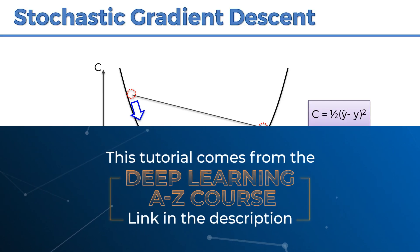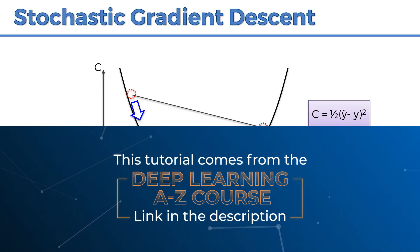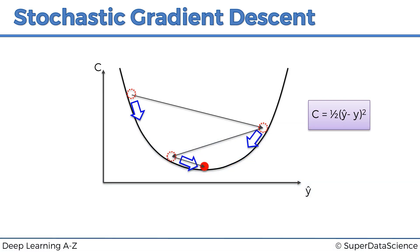Previously we learned about gradient descent and we found out that it is a very efficient method to solve our optimization problem where we're trying to minimize the cost function. It basically takes us from 10 to the power of 57 years to solving a problem within minutes, hours, or a day or so, and it really helps speed things up because we can see which way is downhill and just go in that direction.